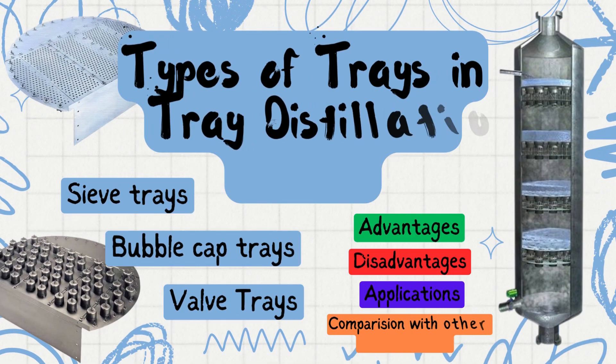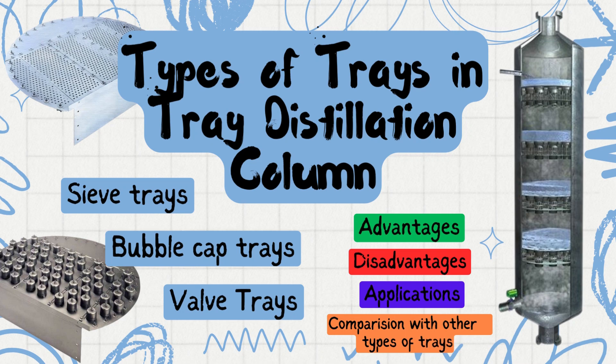Hello guys, welcome back to our YouTube channel. Today in this video we will be discovering the topic of tray distillation columns. Particularly, we will be covering what is a tray distillation column and the various types of trays used — more precisely, the three commonly used types: sieve tray, bubble cap tray, and valve tray. We will be looking at their function, advantages, disadvantages, and applications.